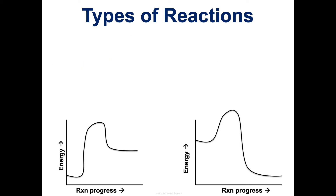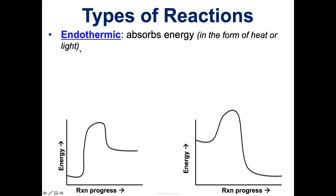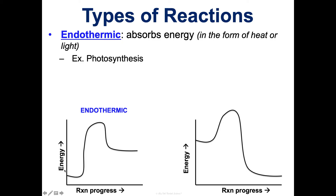Two words we need to know in biology are endothermic and exothermic. Endo — think 'in'; therm — think 'heat,' so we're bringing in heat. Endothermic reactions overall absorb energy, usually in the form of heat or light. An example of this is photosynthesis: the overall amount of energy required to break the bonds in the reactants is more than the energy released when the new bonds form in the products. We start with less energy, input a ton of energy to get it going, and end with more — thus there's an overall absorbing of energy, in photosynthesis in the form of light from the sun.